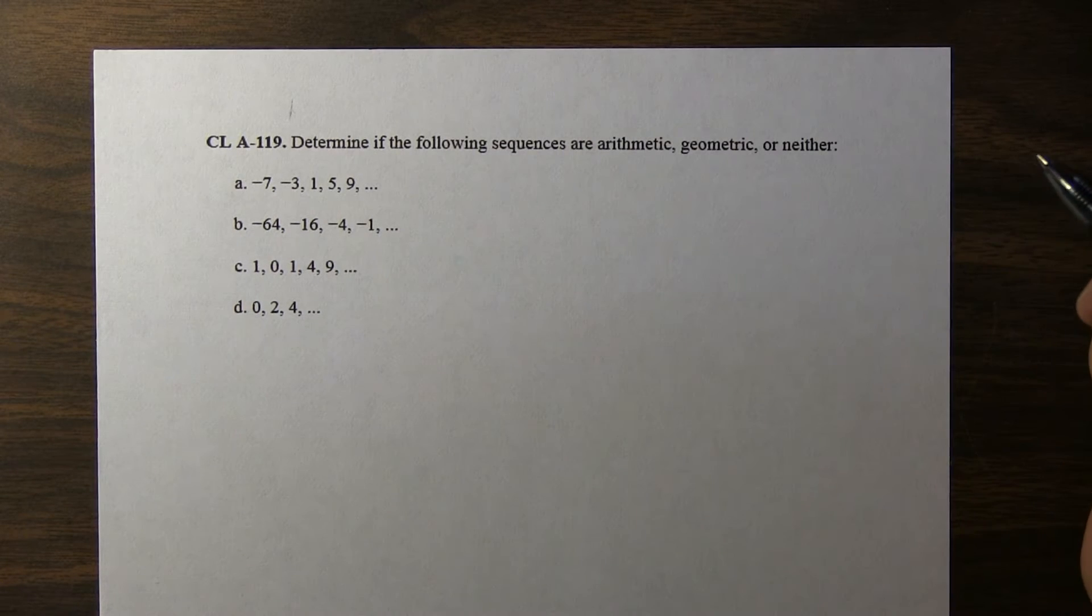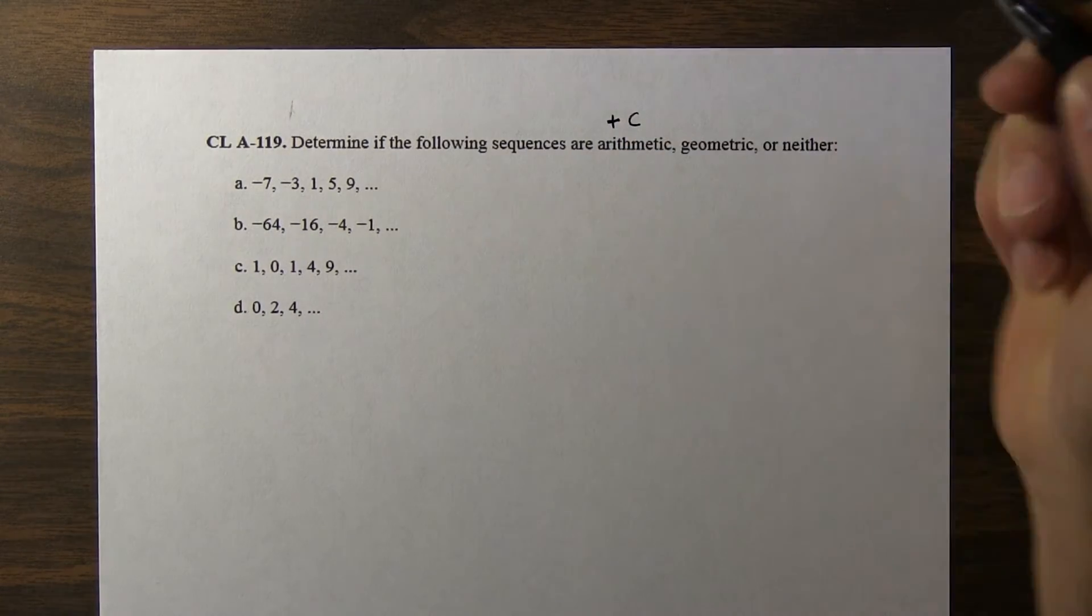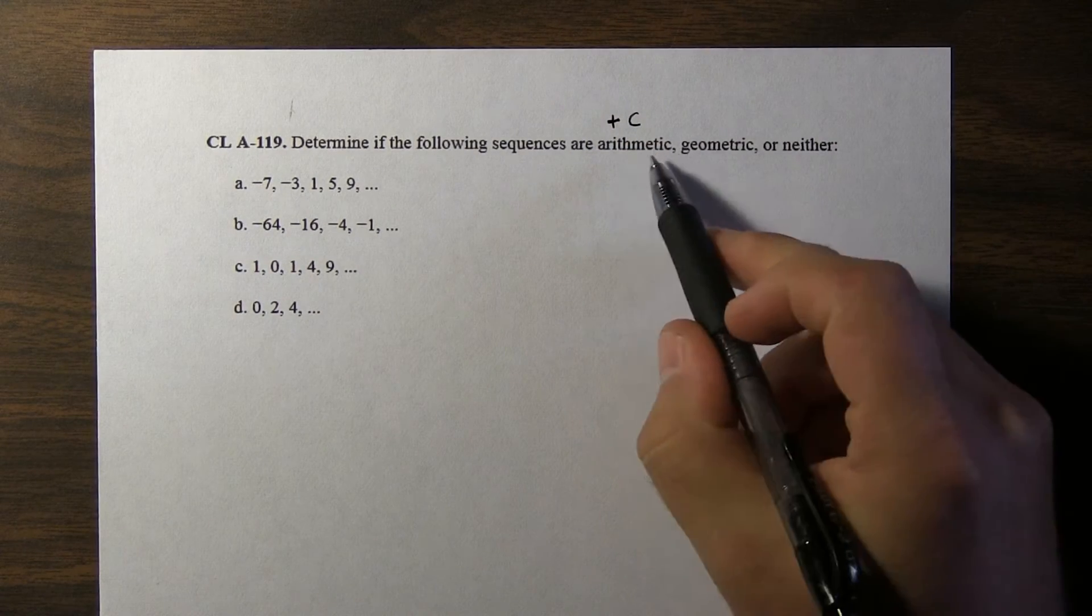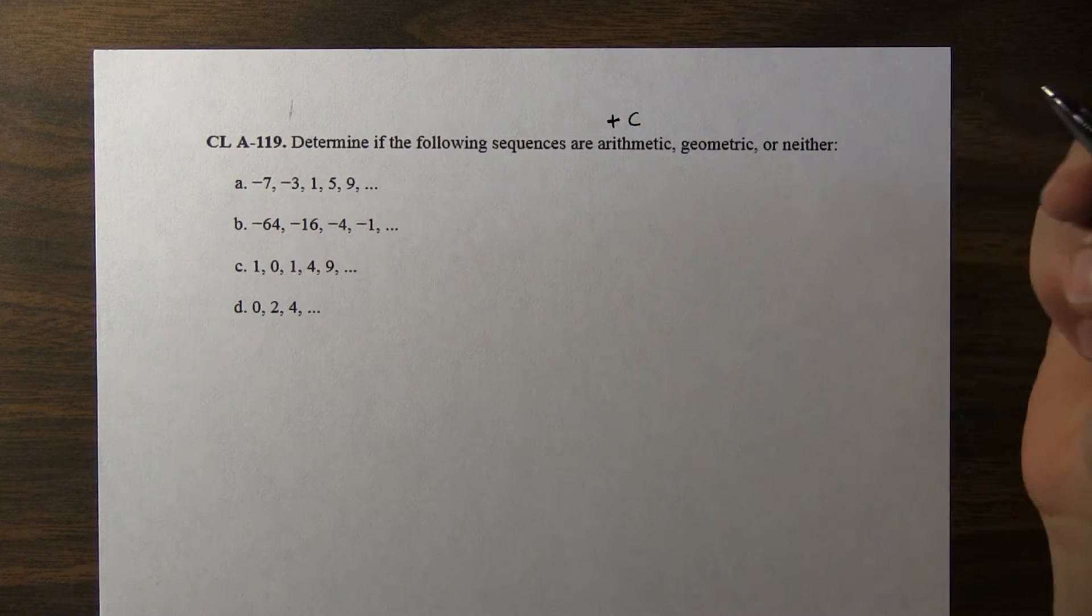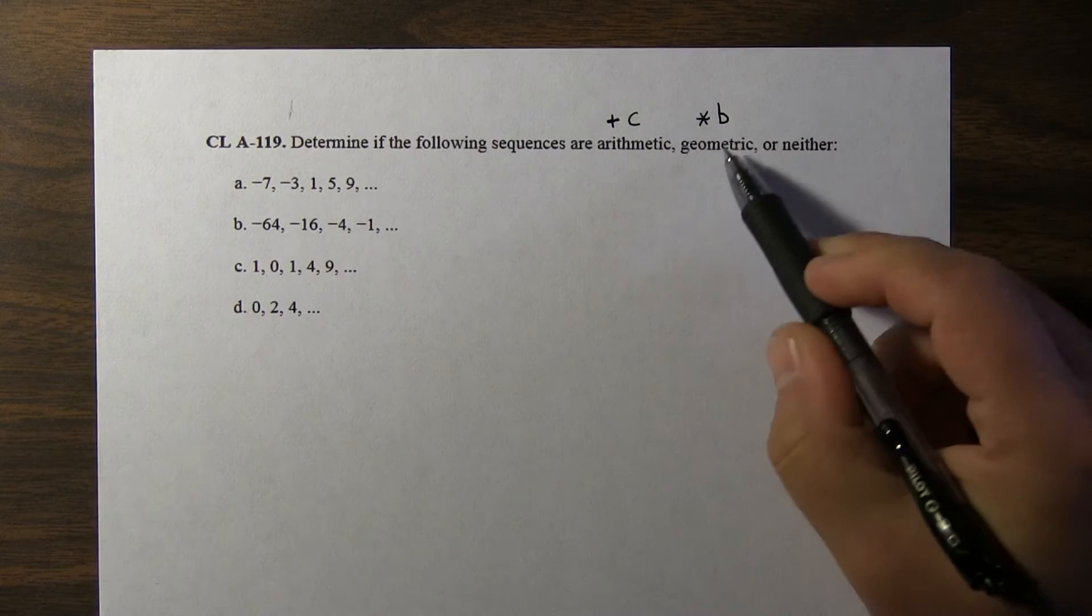In an arithmetic sequence, we add a constant to each term. So I'm going to write plus c. So each term is found by adding a constant. In a geometric sequence, we find the next term by multiplying by a constant, which I'll call b.